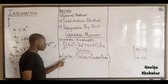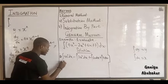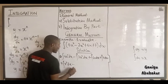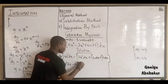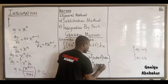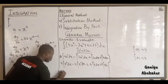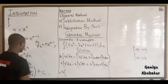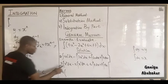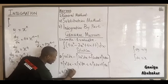For integration, the next step is to bring out the constant coefficient outside the integral sign. So we have: 4 times the integral of x cubed dx, minus 2 times the integral of x squared dx, plus 6 times the integral of x dx, plus 7 times the integral of dx. Now we integrate each variable term. For x cubed, we add 1 to the power to get x to the power 3 plus 1, all over 3 plus 1. For x squared, we get x to the power 2 plus 1 over 2 plus 1. For x, which is x to the power 1, we get x to the power 1 plus 1 over 1 plus 1.